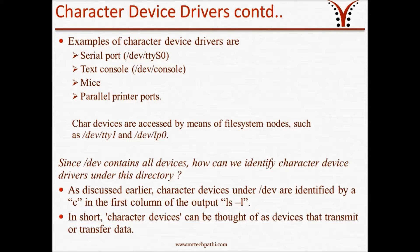Examples of character device drivers are serial ports, text consoles, mice, and parallel printer ports. Character devices are accessed by means of file system nodes such as /dev/tty1 and /dev/lp0 for the printer. Since /dev contains all devices, how can we identify character devices under this directory? When you list the files under /dev, the character devices are identified by the character 'c' in the first column. In short, character devices can be thought of as the devices that transmit or transfer data.